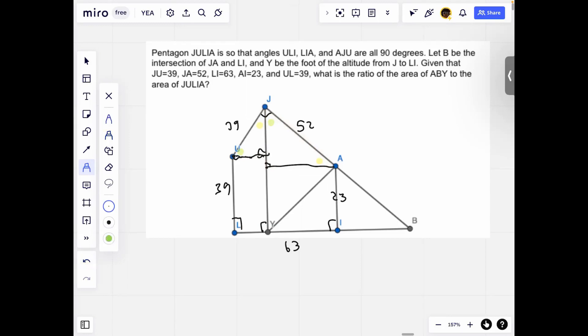So if we let this point be S, if we let US be X, then JS is the square root of 39 squared minus X squared by the Pythagorean theorem. And since the ratio of the hypotenuses are 4 to 3, then the ratio of the legs should also be 4 to 3.